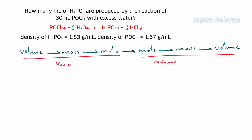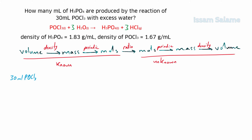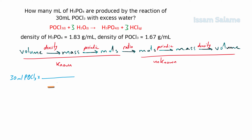In volume-volume exercises we always use five conversion factors — unless an additional unit conversion is needed, as we will see in the next exercise. To convert volume to mass we use density, mass to moles we use the periodic table, and moles to moles we use the mole ratio. We start with the given, 30 milliliters of POCl3, and multiply it by a fraction. Since the unit is milliliters of POCl3, we put milliliters of POCl3 in the denominator.